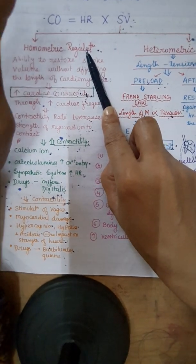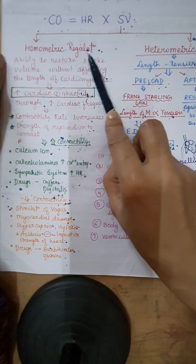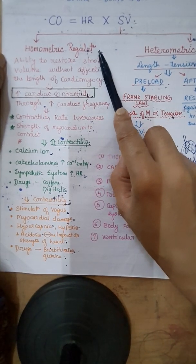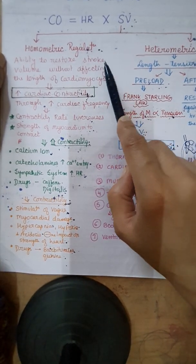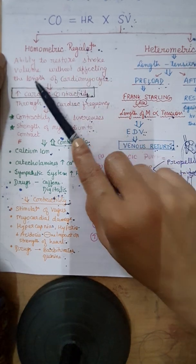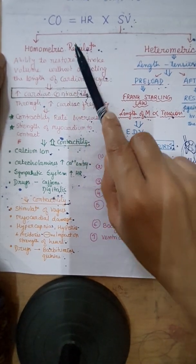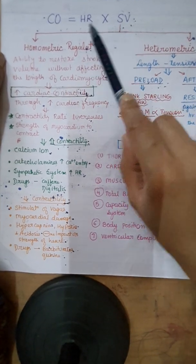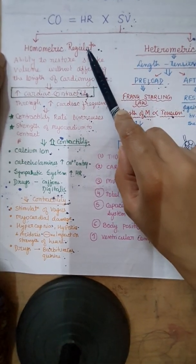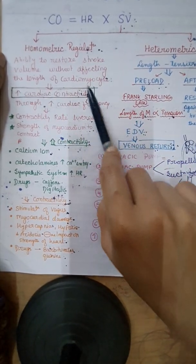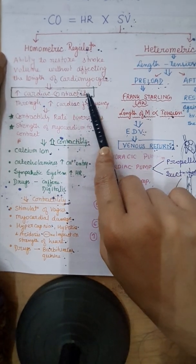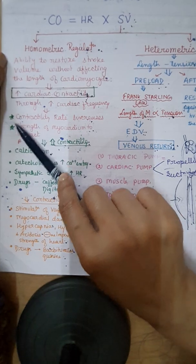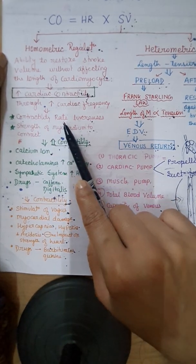But in homometric regulation, the length of the muscle has no role. So the ability of cardiomyocytes to restore the stroke volume without affecting the length of the cardiomyocyte is homometric regulation. It regulates stroke volume through cardiac contractility. Cardiac contractility has two factors: first is the rate — there is increased cardiac frequency — and second is the strength of the myocardium.